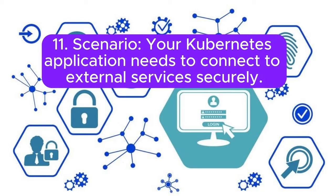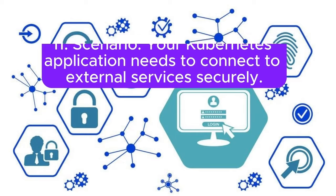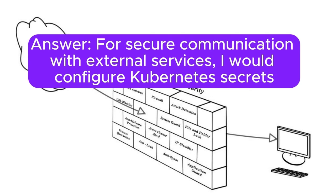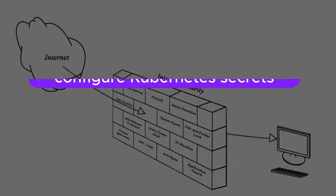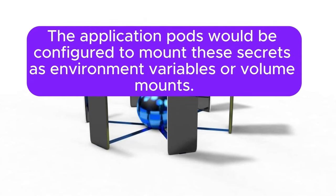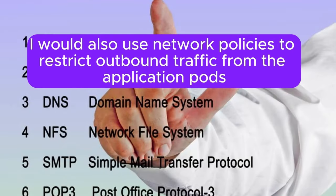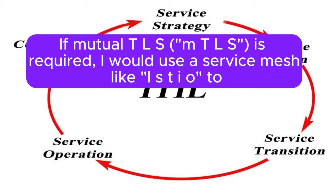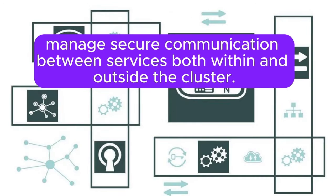Scenario 11: Your Kubernetes application needs to connect to external services securely. How would you configure Kubernetes to handle secure communication? Answer: For secure communication with external services, I would configure Kubernetes secrets to store sensitive information like API keys, certificates, and passwords. The application pods would be configured to mount these secrets as environment variables or volume mounts. I would also use network policies to restrict outbound traffic from the application pods to only the required external services, minimizing exposure. If mutual TLS (mTLS) is required, I would use a service mesh like Istio to manage secure communication between services both within and outside the cluster.